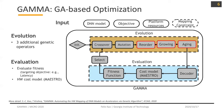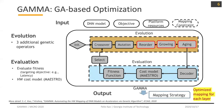For the input, we take a DNA model, objective like latency or energy, platform resources like number of PE, global or local buffer, and mapping constraint. And we output the mapping strategy, which is the optimized mapping of each layer.